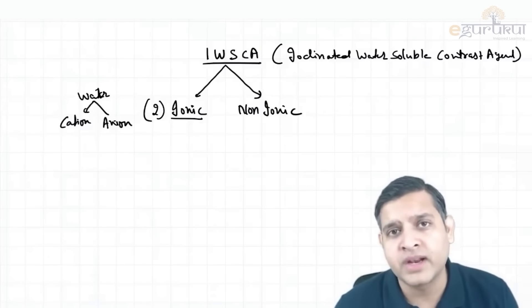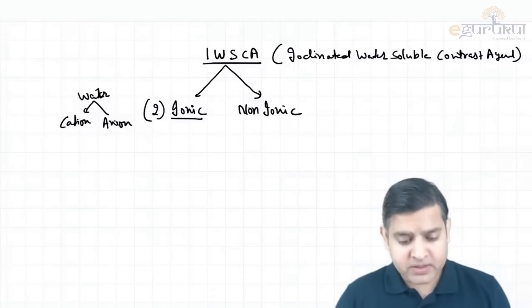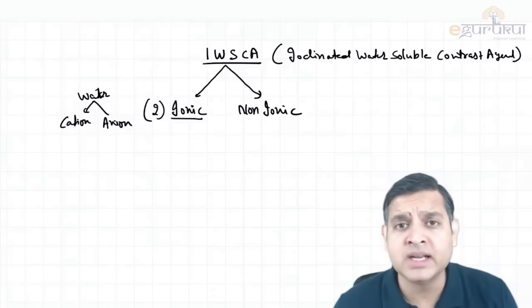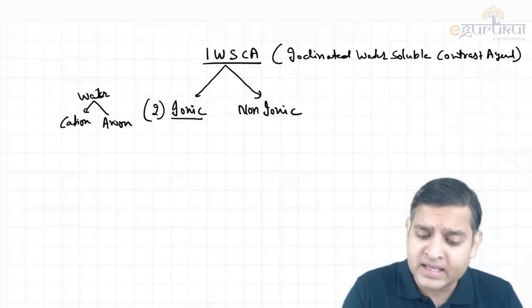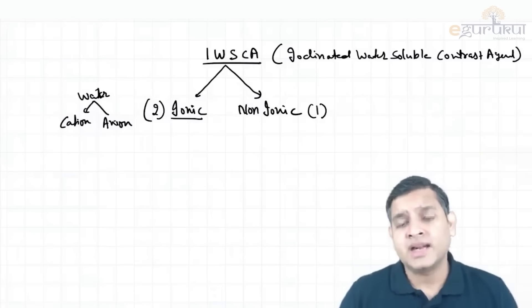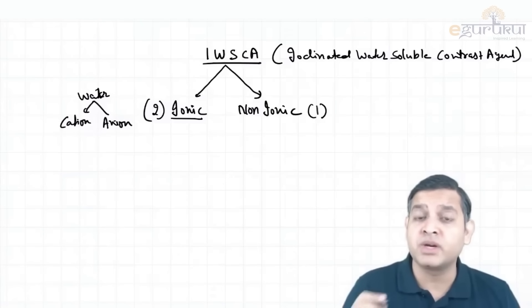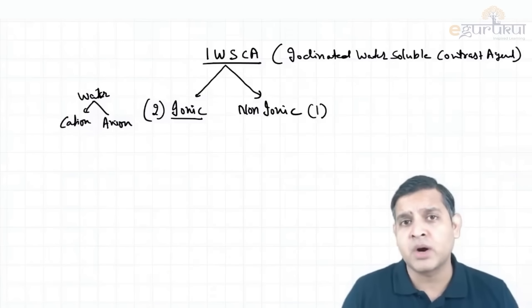Every ionic compound gives two particles. If somebody asks me how many particles are given by a non-ionic compound, I will say non-ionic compound does not break down into cation and anion, and that is why it will give only one particle. So, an ionic compound gives two particles and non-ionic compound gives only one particle per molecule.